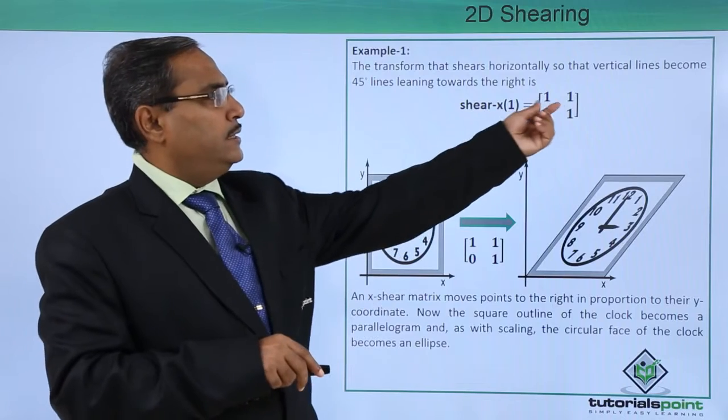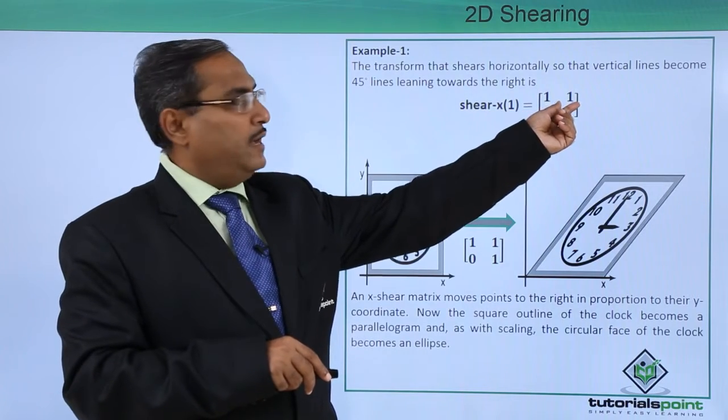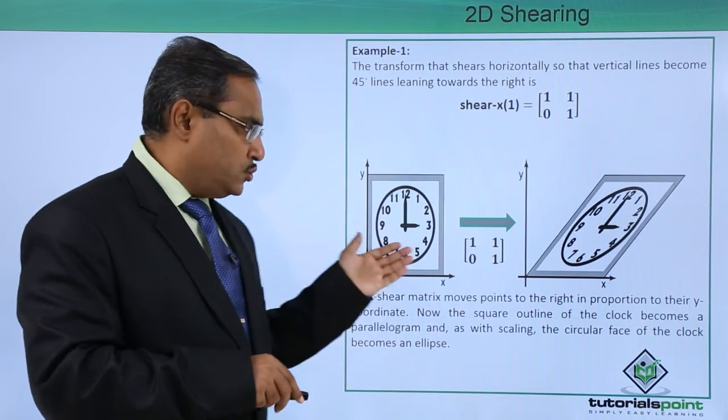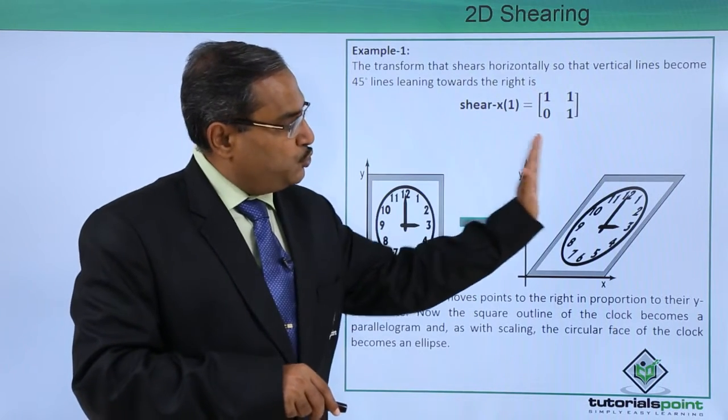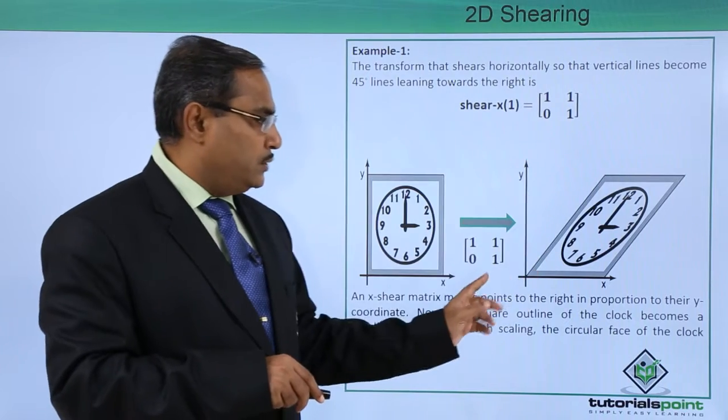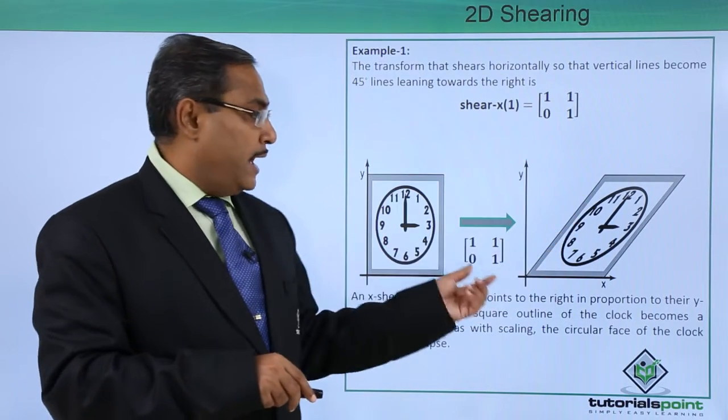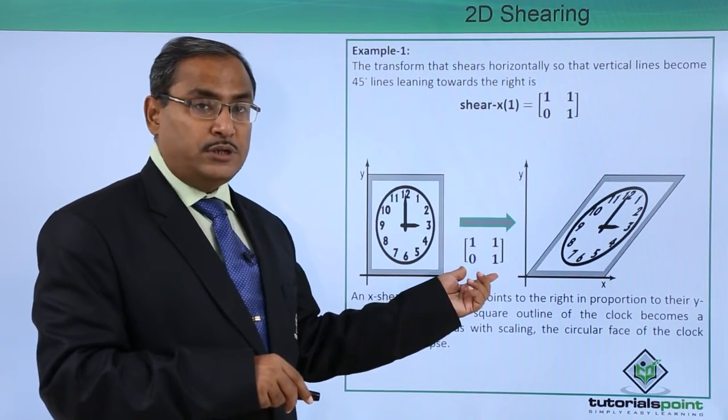If you consider here this is our tan of 45, we are getting this 1 here. Now what will happen, we are having this shear along the x-axis. We are pushing it, so that it will get sheared in this way and this is the respective transformation matrix.